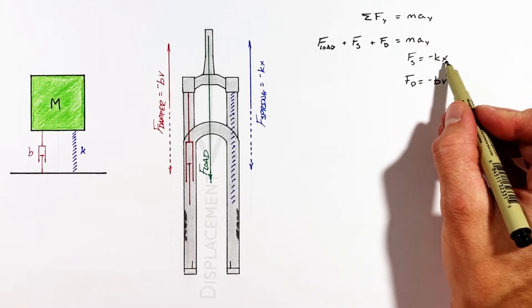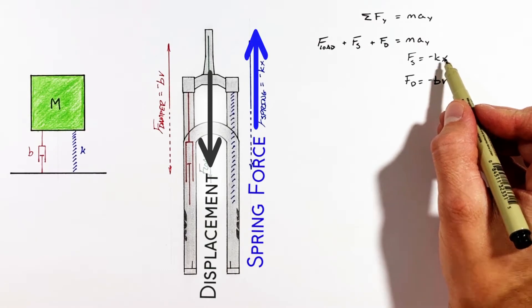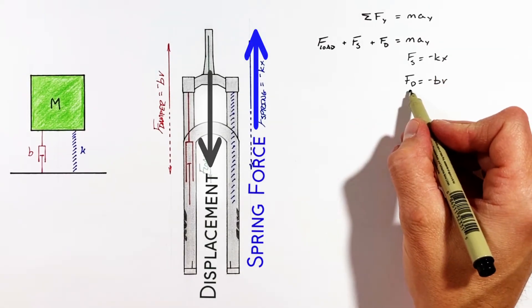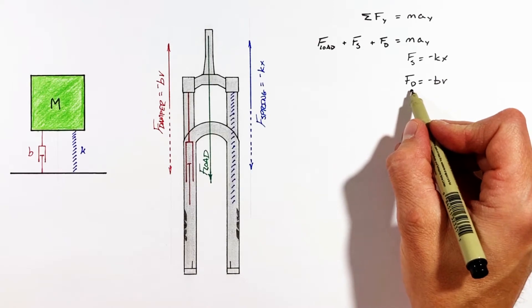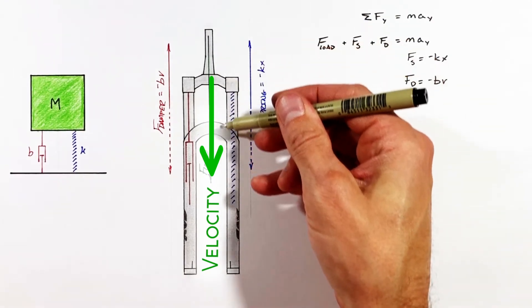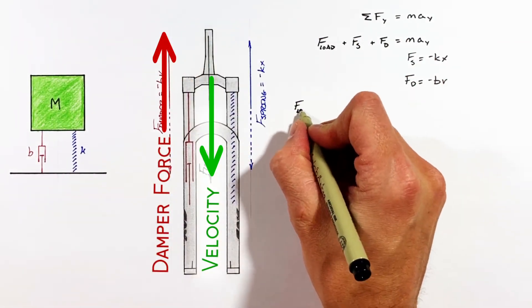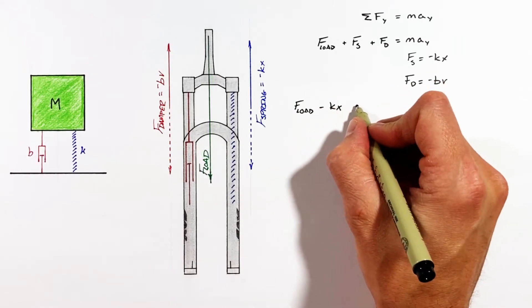We see a similar relationship when looking at the damper. The damper force is given by negative BV. If the fork is moving down, the damper force is in the opposite direction. So substituting these two expressions into the second law, we get an equation of motion that relates the forces acting on this mass to its acceleration.